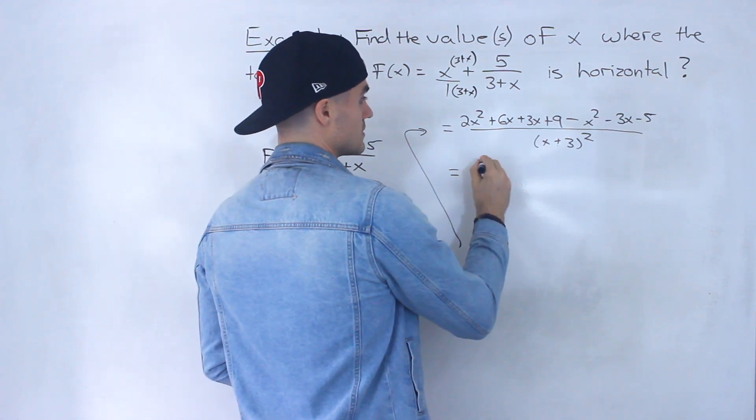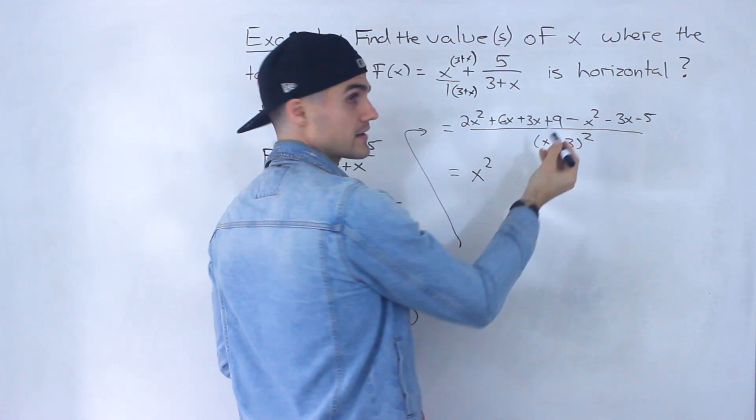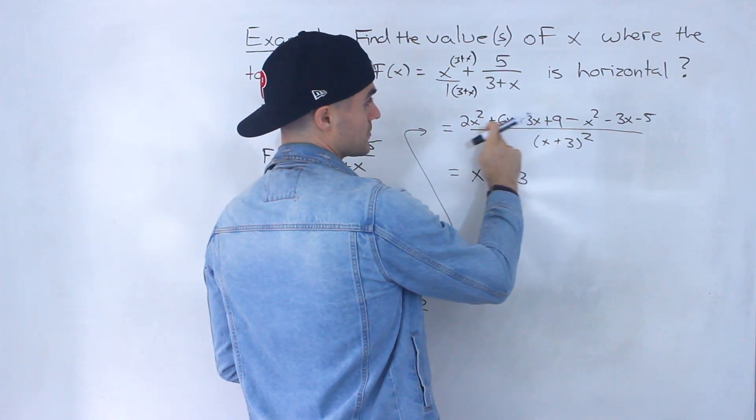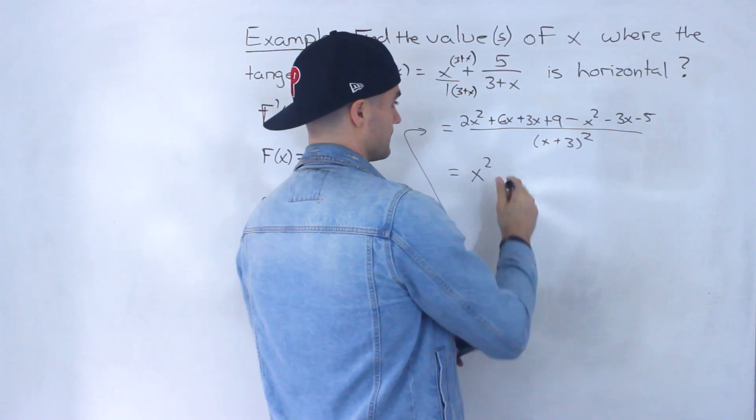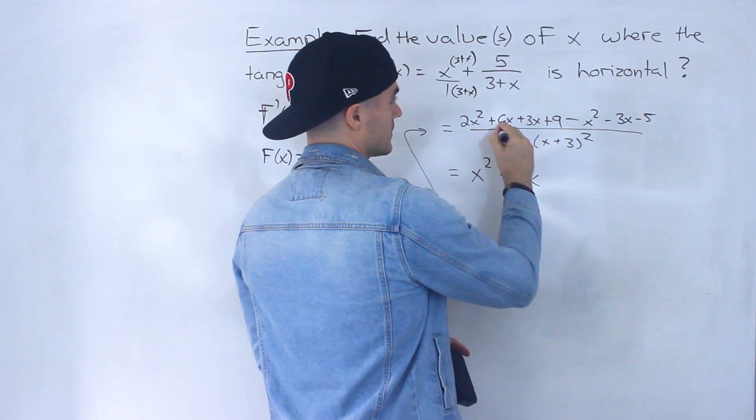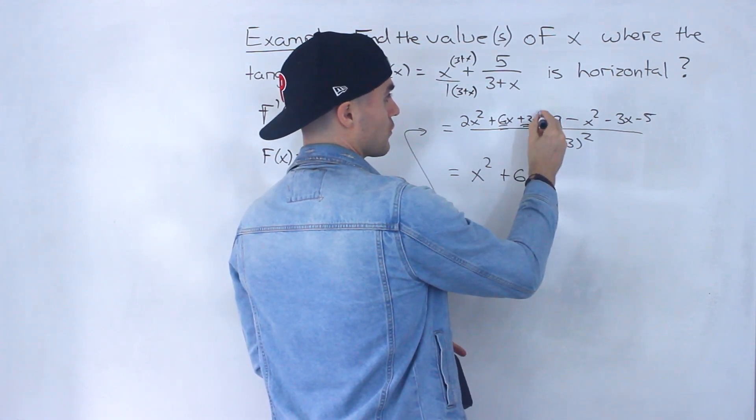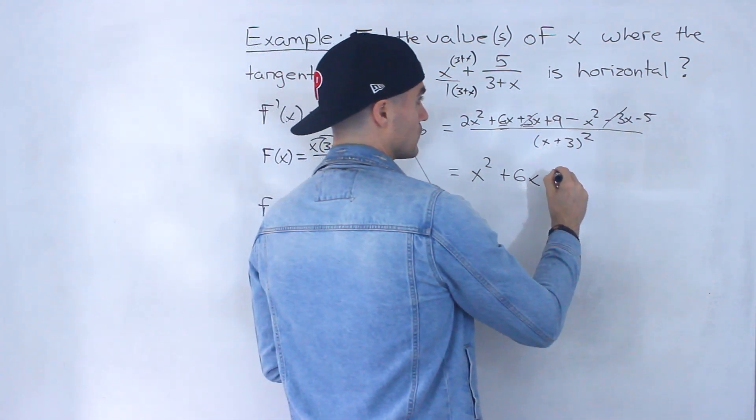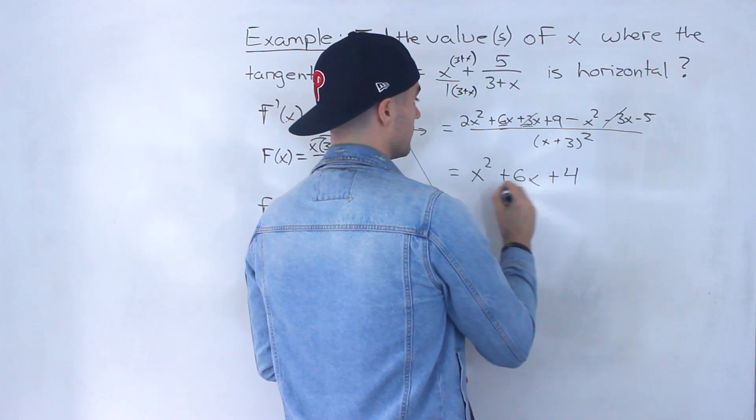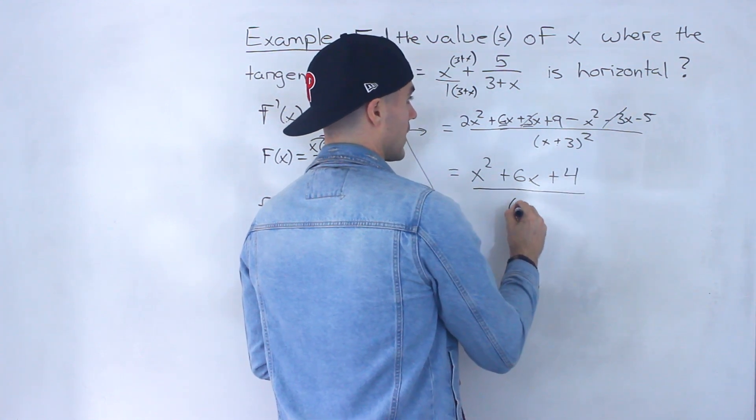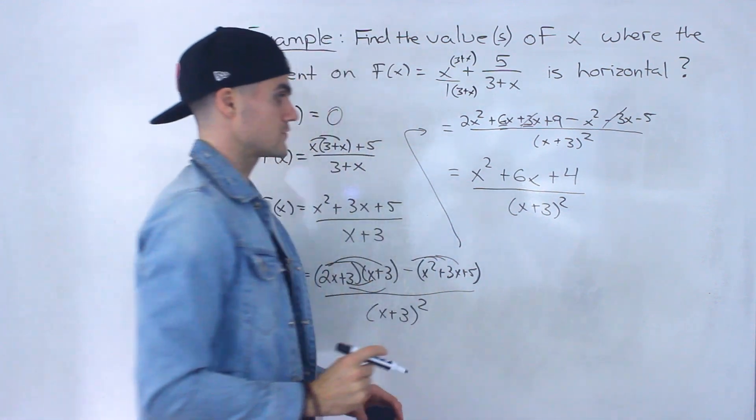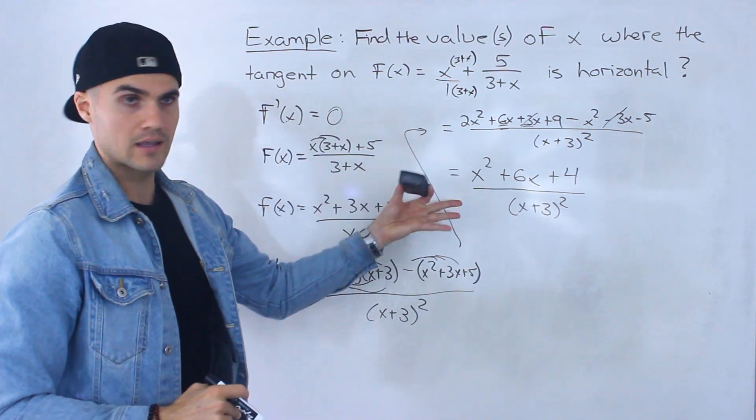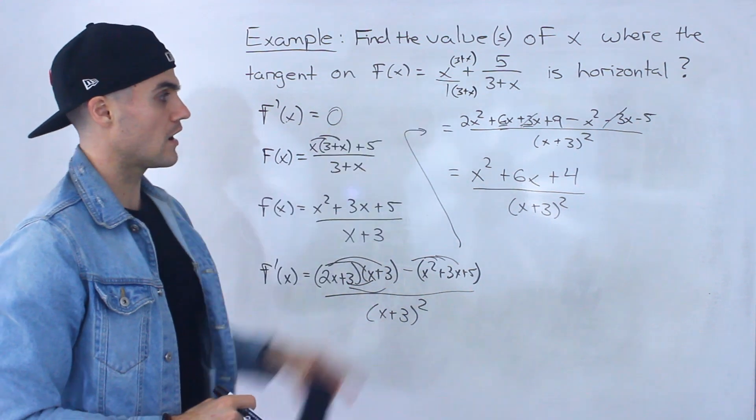Then from here let's simplify. So 2x² - x² is x². 6x - 3x is 3x. Or sorry, 6x + 3x is 9x minus 3x would be 6x there. Because these two are like terms, or the 3x's cancel out, so we're just left with a 6x. Then 9 - 5 would give us positive 4. That's going to be all over (x+3)². So this here ends up being the derivative of that function.